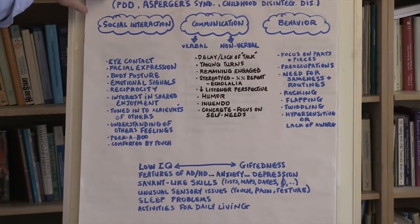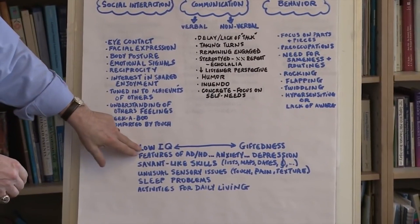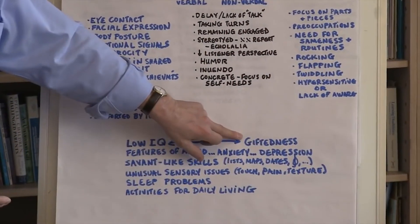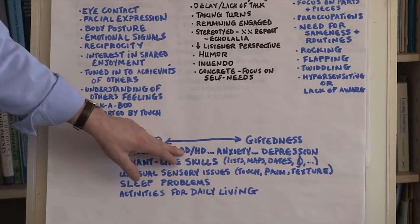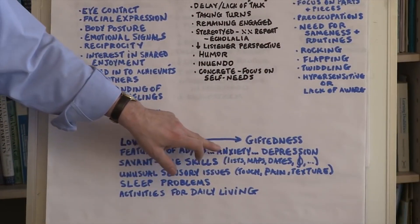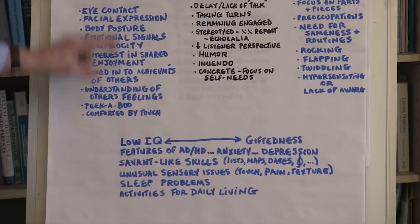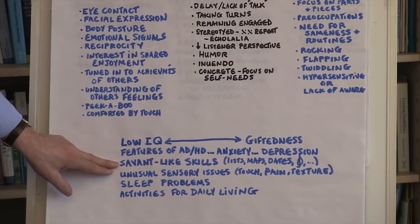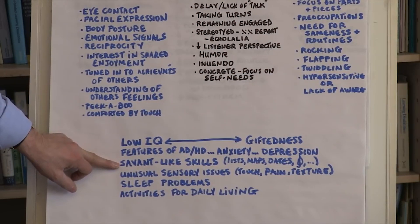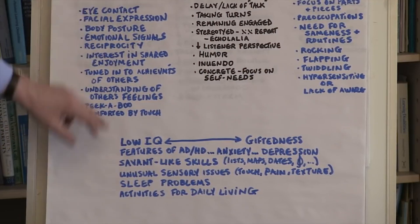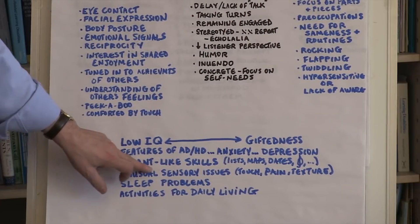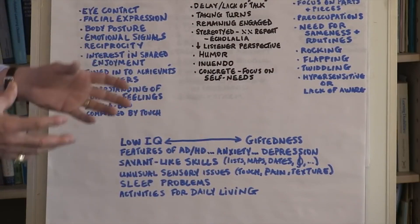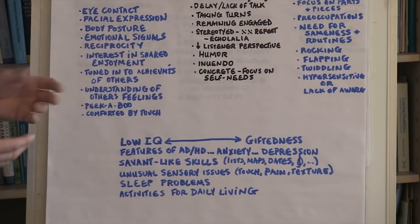Of great interest is that individuals on the autism spectrum disorder could be of low IQ with significant cognitive and intellectual challenges, or they could be gifted. There are features of ADHD seen in many individuals on the spectrum, and anxiety and depression are often complicating factors. We all know of movies like Rain Man, where someone has extraordinarily highly developed abilities. Some individuals with autism present with savant-like skills — they're incredibly capable of remembering lists, maps, or dates, or may have certain gifts in music.